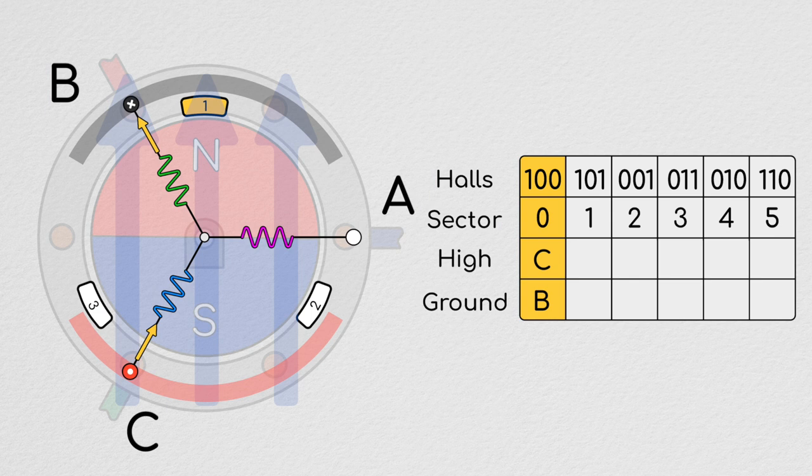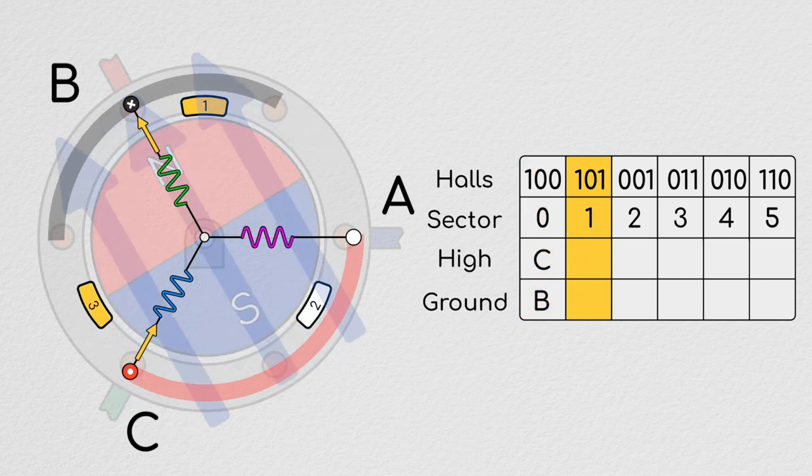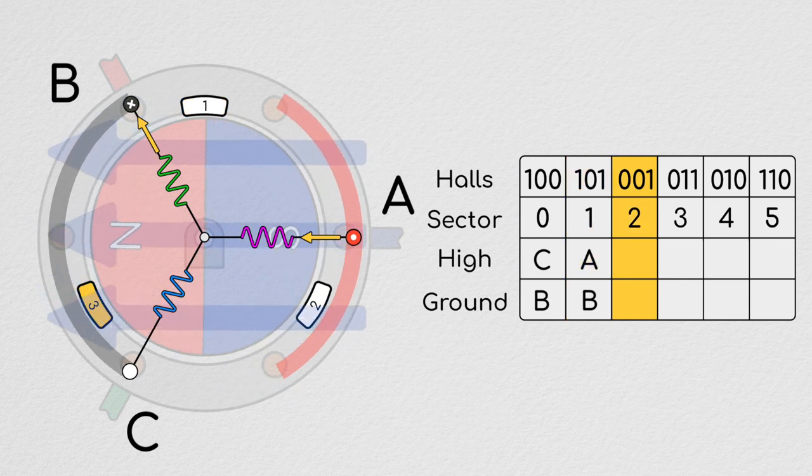As we progress our rotation and enter Hall Sector 1, node C is disconnected from high and node A is connected there instead. Continuing to rotate, as we enter Sector 2, we now want to disconnect B from ground and connect C to ground.